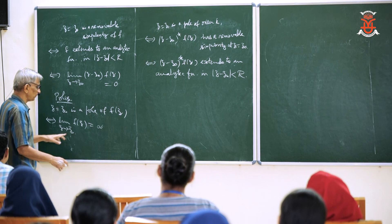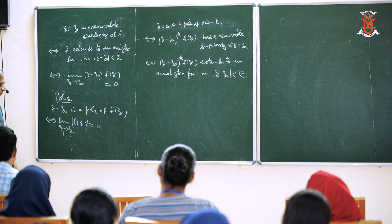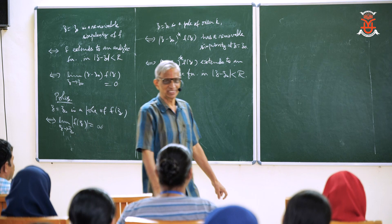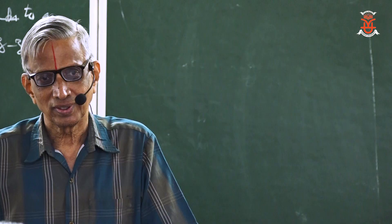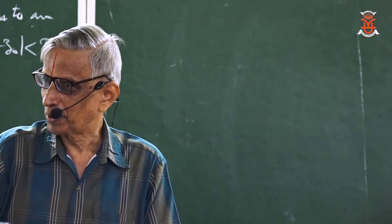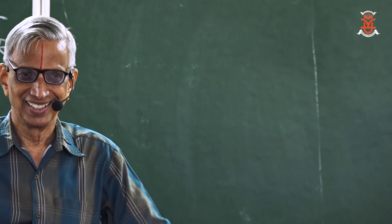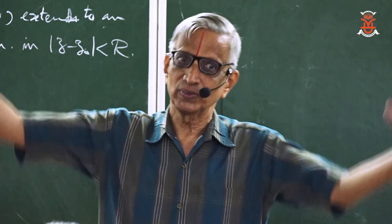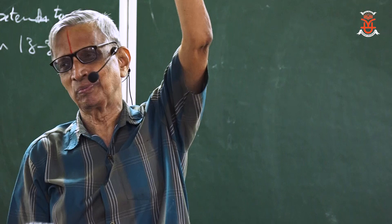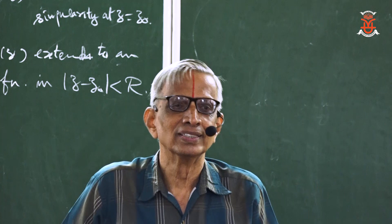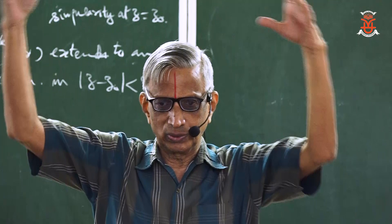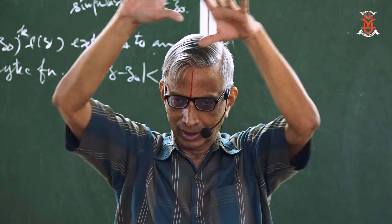So z₀ is a pole if and only if (z − z₀)^k · f(z) extends to an analytic function. The limit is infinity, which if you want to think of as a complex number, is the point at infinity. In every direction there is an infinity, but all of them meet at one point — that gives you the Riemann sphere, the North Pole in stereographic projection, which is the one-point compactification of the plane.